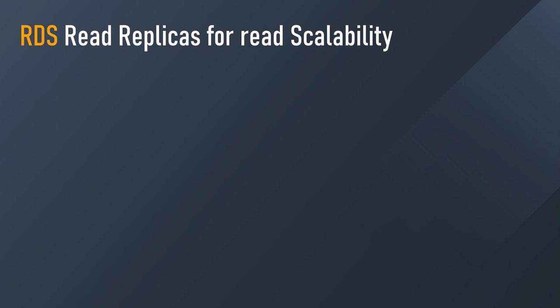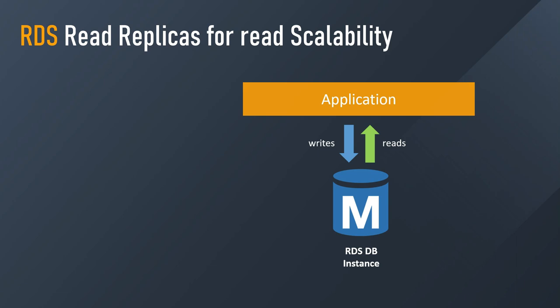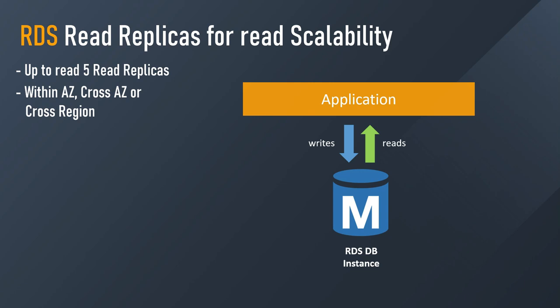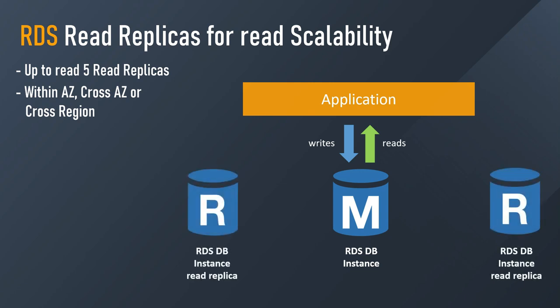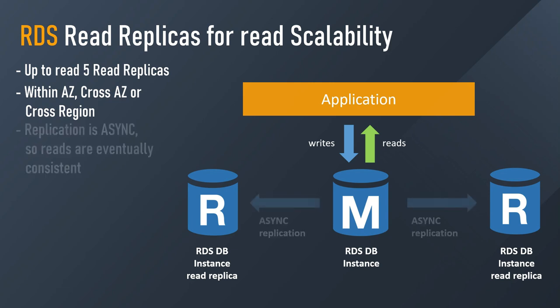Read Replicas, as the name indicates, help you scale your reads. Let's have an example — we have our application and an RDS database instance, and our application performs reads and writes to that instance. Since we want to scale the reads because the main database instance cannot scale enough and receives too many requests, we can create up to five Read Replicas. They can be within the same Availability Zone, cross Availability Zone, or cross region — three different options, very important to remember.